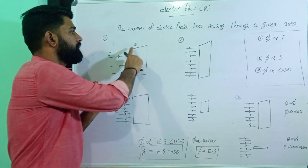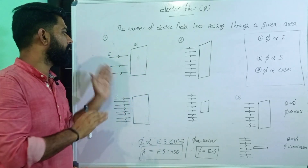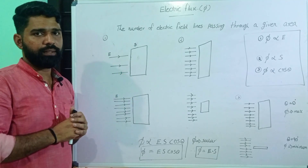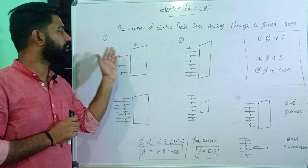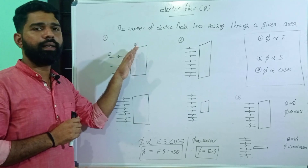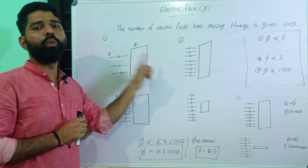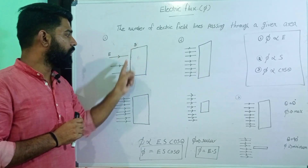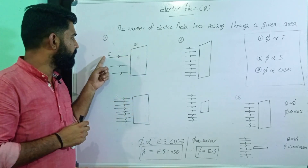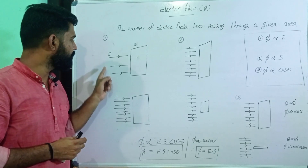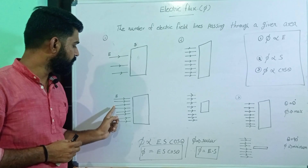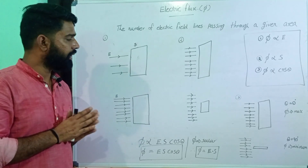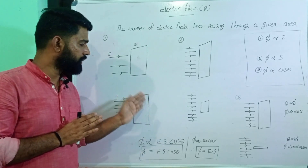First condition: we have a surface, this is the surface, we have a surface with electric field lines. The number of electric field lines is increasing — one, two, three, four, five, seven, eight — eight electric field lines. Then the total number of electric field lines passing through the surface will increase.